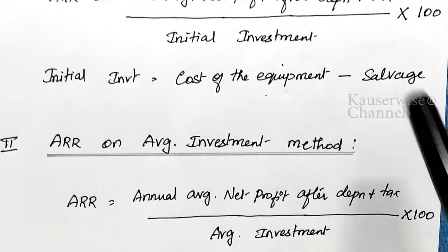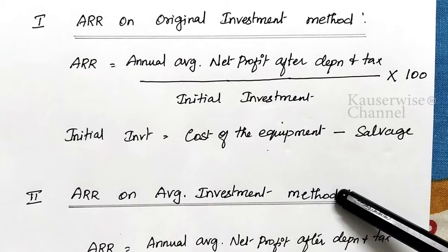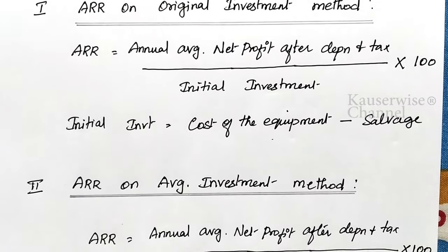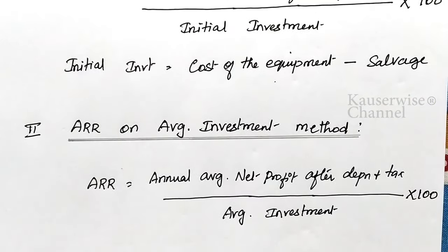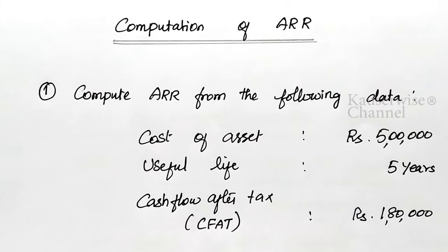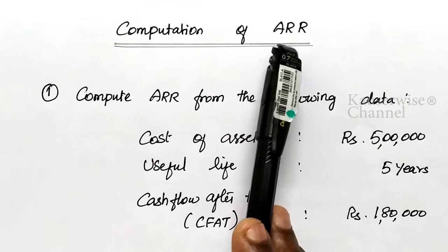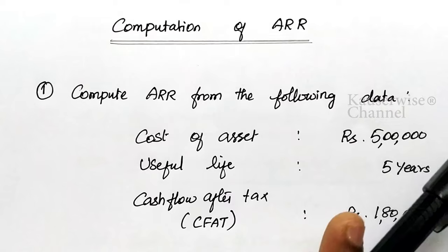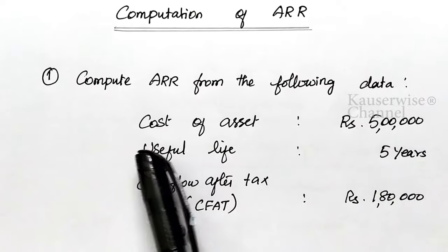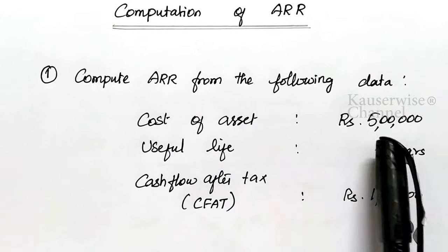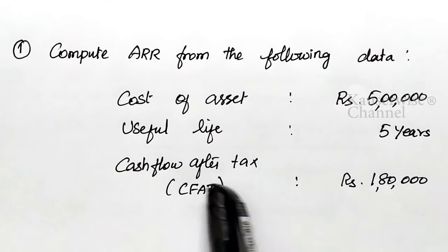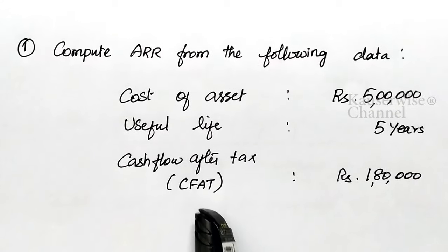These are the two major methods to calculate ARR: ARR on original investment, and ARR on average investment. Now let us try to understand the concept thoroughly along with problems. We are going to see three different problems to calculate ARR. Look at the first problem: compute ARR from the following data. Cost of asset is 5 lakhs, useful life of an asset is 5 years, and cash flow after tax (CFAT) is given.